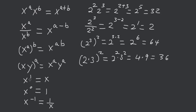x to the 1 is equal to x. So 2 to the 1 is equal to 2. x to the 0 is equal to 1. So 2 to the 0 is equal to 1 — anything to the 0 is equal to 1.